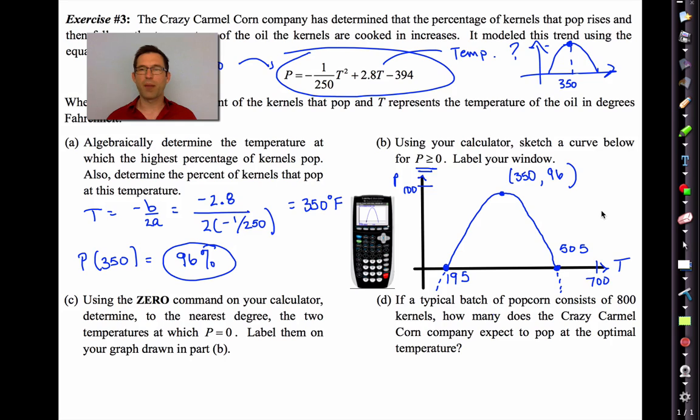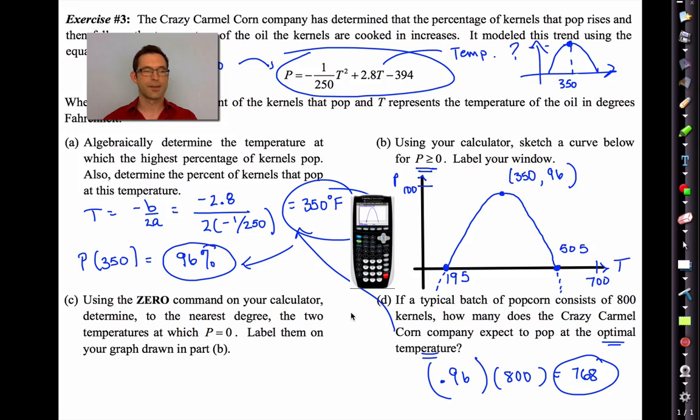Now, letter D. If a typical batch of popcorn consists of 800 kernels, how many does the crazy caramel corn company expect to pop at the optimal temperature? This is actually a pretty easy percent problem, but it's a nice one to throw in, so think about this for a minute. Well, we know at the optimal temperature, 96% of the kernels pop. So some pretty basic work, 0.96 times 800, and we get 768. Now, there's one last part of this problem, which is kind of cool, because it's going to involve an inequality. But we're going to look at that on the next screen. So pause the video now and write down anything you need to.